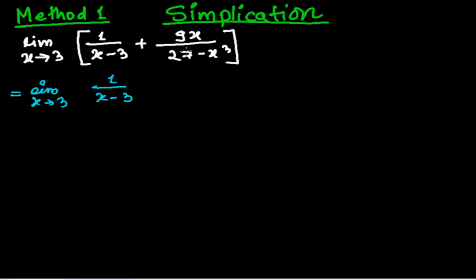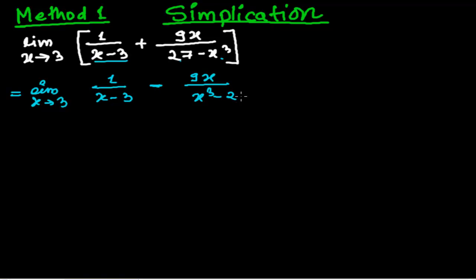So we have to do the same — first variable, then constant. So what I am writing here: 9x upon first variable, and then will be the constant. So 27 is positive and x cubed is negative. So to make it negative, I have to put it here as negative.